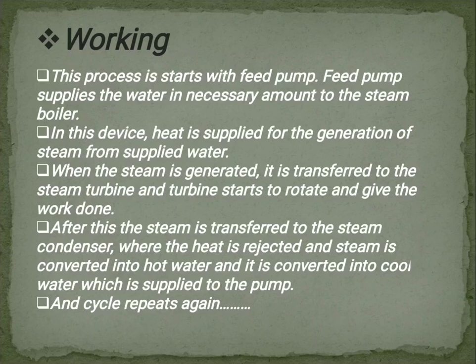So the process starts with the feed pump. The feed pump supplies the water in necessary amount to the steam boiler. When water is converted to steam in the boiler, then steam is fed into the turbine. Heat is supplied for the generation of steam from supplied water. When the steam is generated, it is transferred to the steam turbine and the turbine starts to rotate and gives the work done.